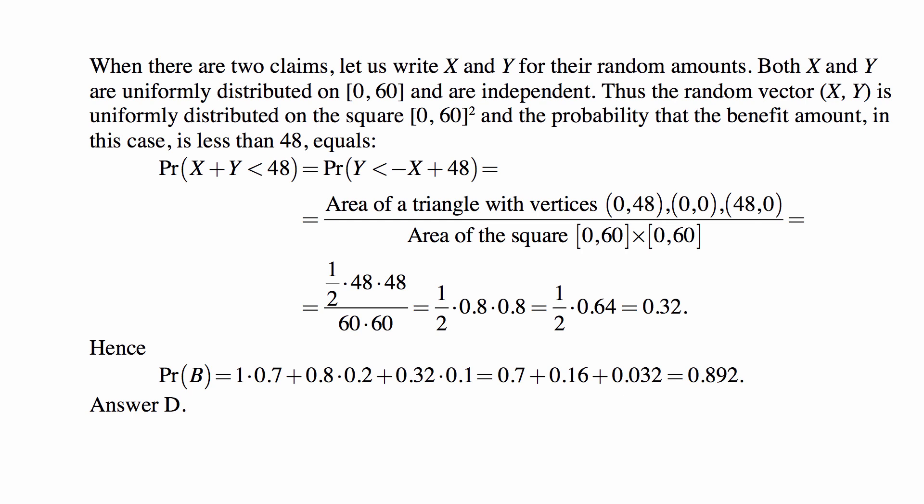So finally the probability of B is 1, when there are no claims, times 0.7, plus 0.8 times 0.2, plus 0.32 times 0.1. So it's 0.7 plus 0.16 plus 0.032, and the total of these is 0.892, which is answer D.